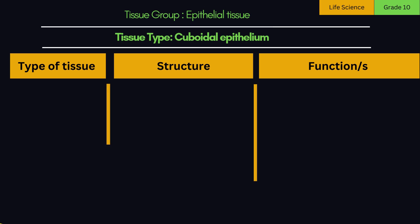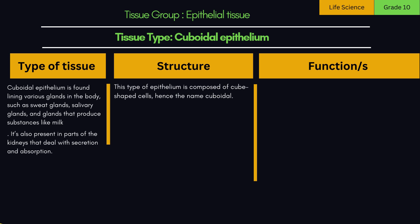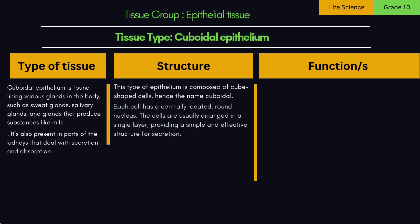D. Cuboidal epithelium. Cuboidal epithelium is found lining various glands in the body, such as sweat glands, salivary glands, and glands that produce substances like milk. It's also present in parts of the kidneys that deal with secretion and absorption. This type of epithelium is composed of cube-shaped cells, hence the name cuboidal. Each cell has a centrally located, round nucleus, and the cells are usually arranged in a single layer, providing a simple and effective structure for secretion.